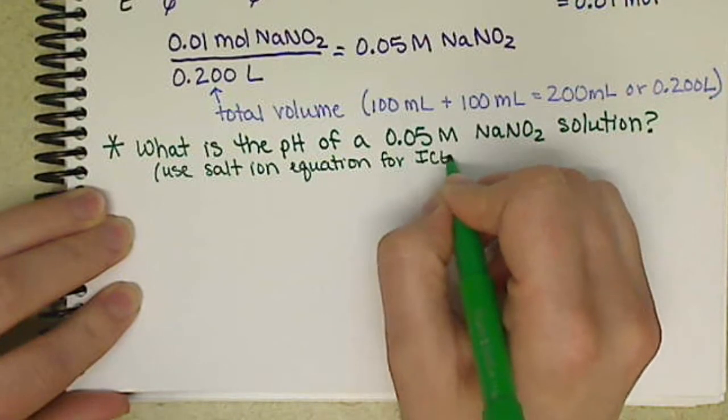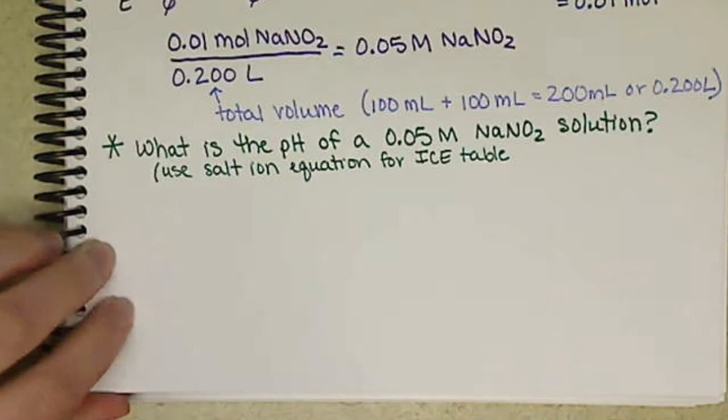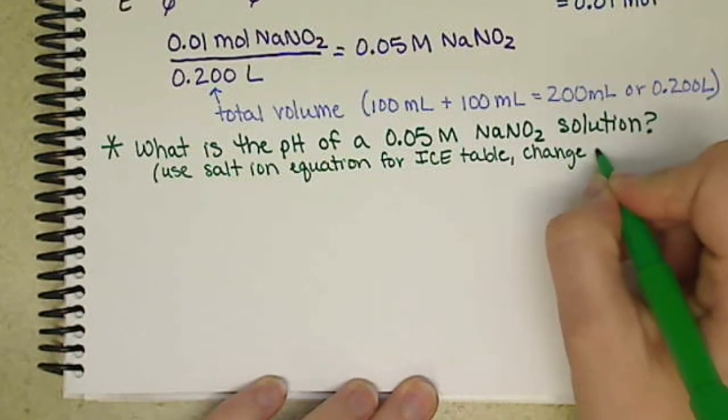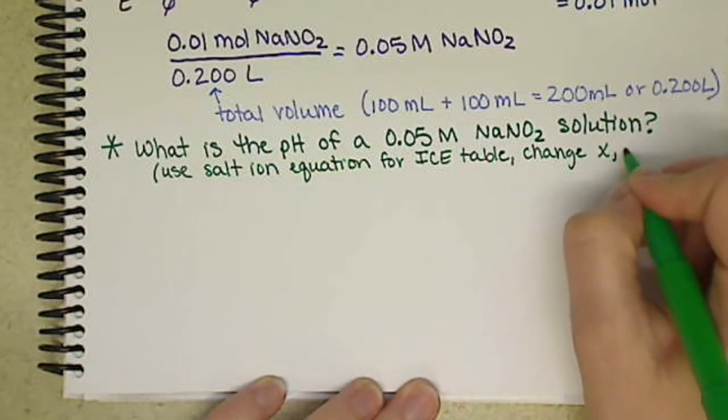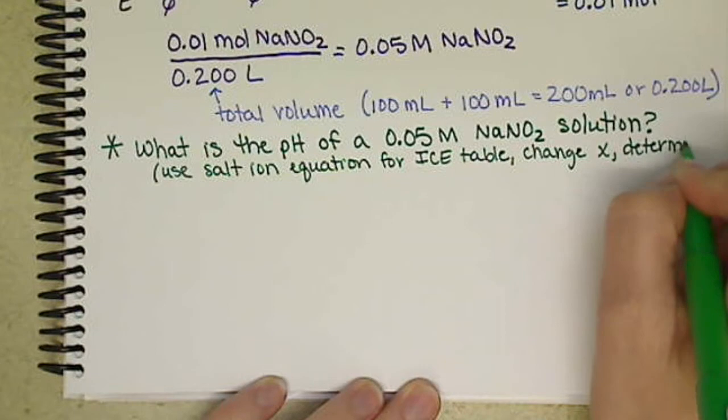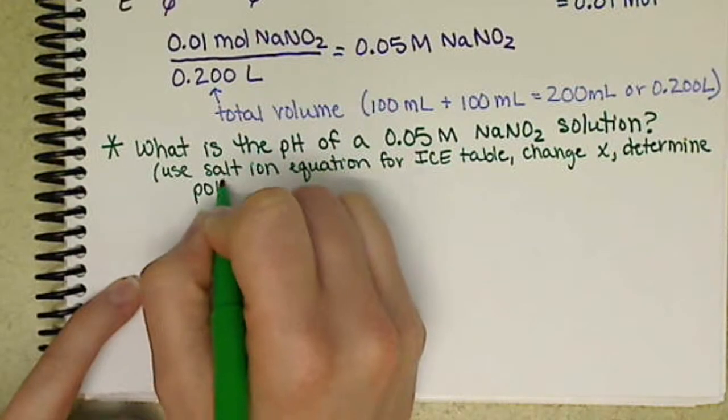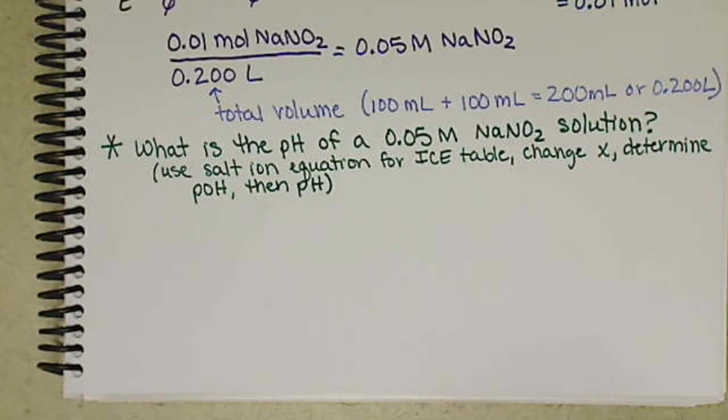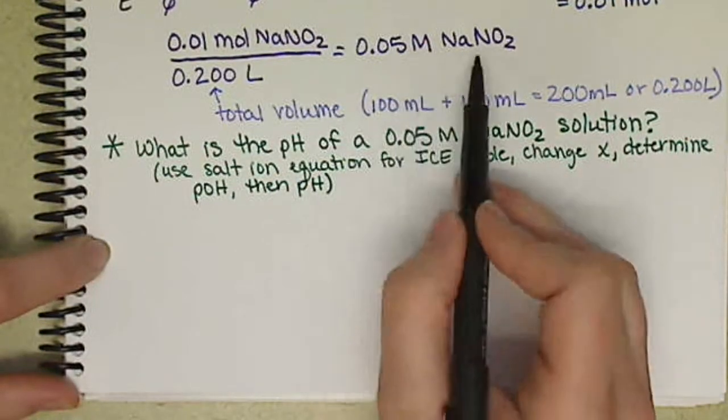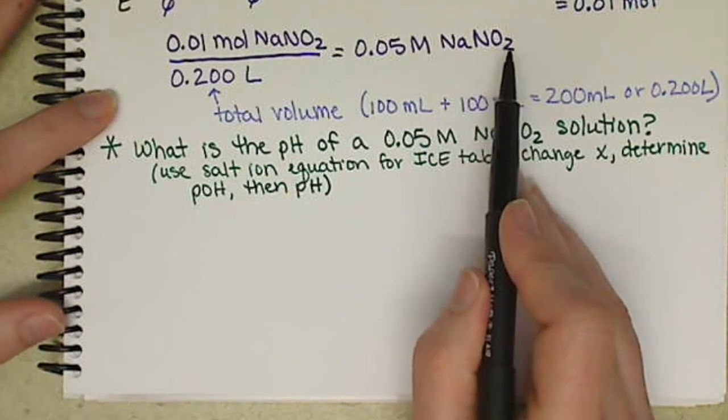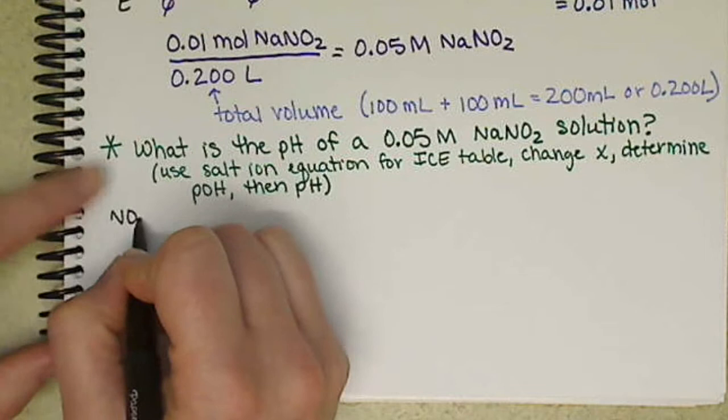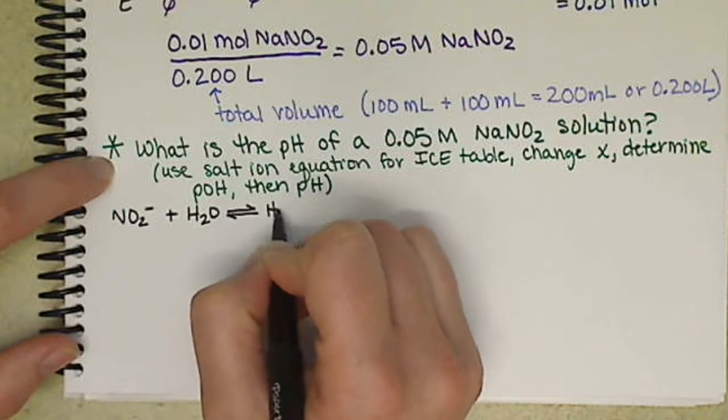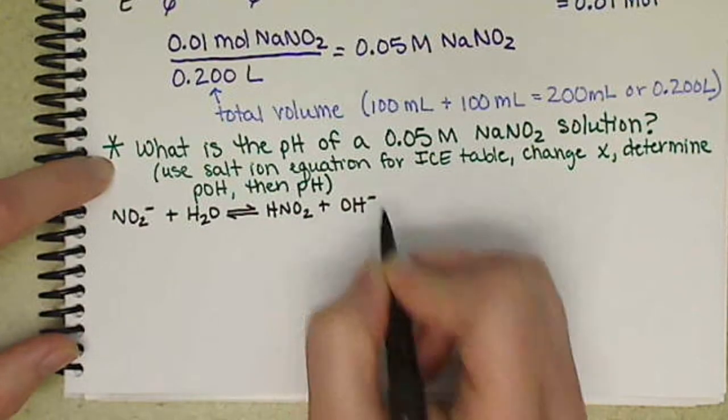If we want to set this up just as we would see the pH of a 0.05 molar NaNO2 solution for the ICE table, our change will be x. Then we're going to have to determine pOH, then pH. So we have our ion from our salt is the NO2-. That's what's going to be contributing to the pH. So we have NO2- interacting with water in equilibrium with HNO2 and OH-.